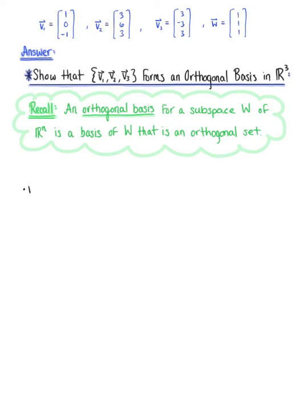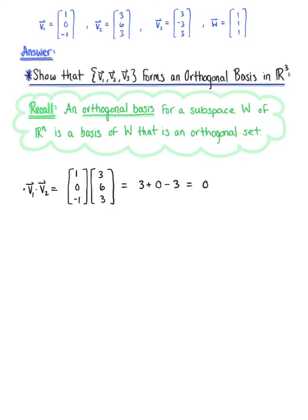We have three cases. Case one: we take the dot product of vector v sub 1 with vector v sub 2. Vector v sub 1 has components 1, 0, negative 1, and we are dotting this with vector v sub 2 which has components 3, 6, 3. Computing the dot product, we have 3 plus 0 minus 3, which equals 0.